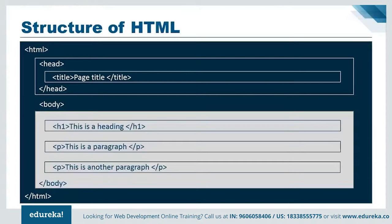Next comes the head tag, which contains most of the meta information about the document. The head tag normally also contains the link to the styling sheets, the fonts you might be using on your web page, and even the JavaScript you might be using. The head tag also has the title element, which specifies the title for the document and can be seen as text on the browser tab. Next comes the body tag, which mostly contains the content visible to the viewer, including elements like h1 tags or paragraph tags which make up the mass of your content.